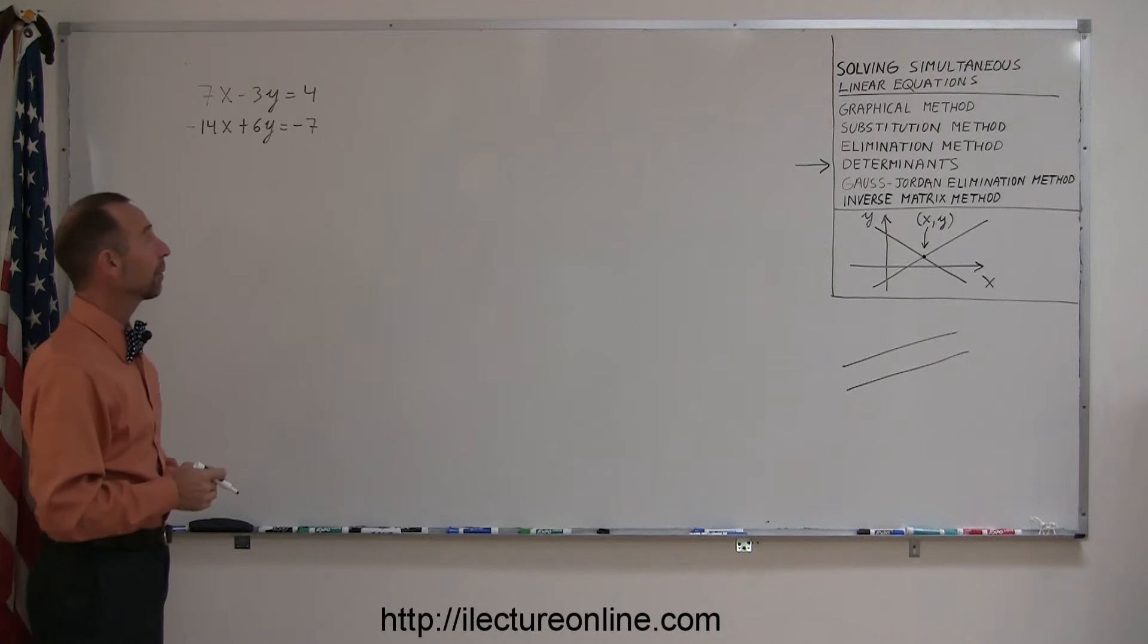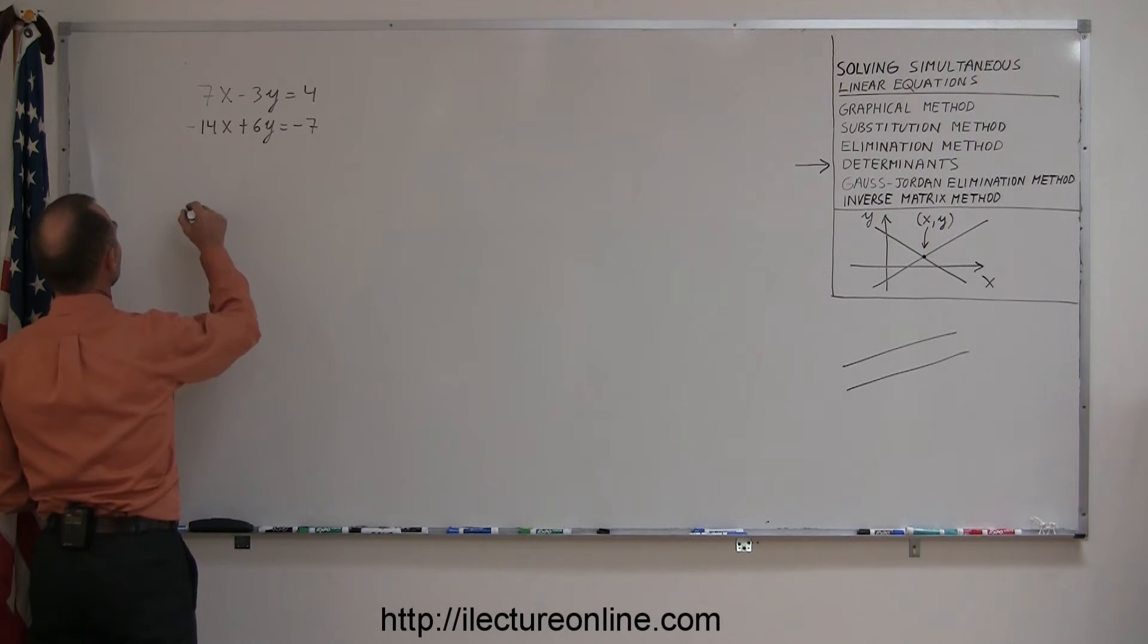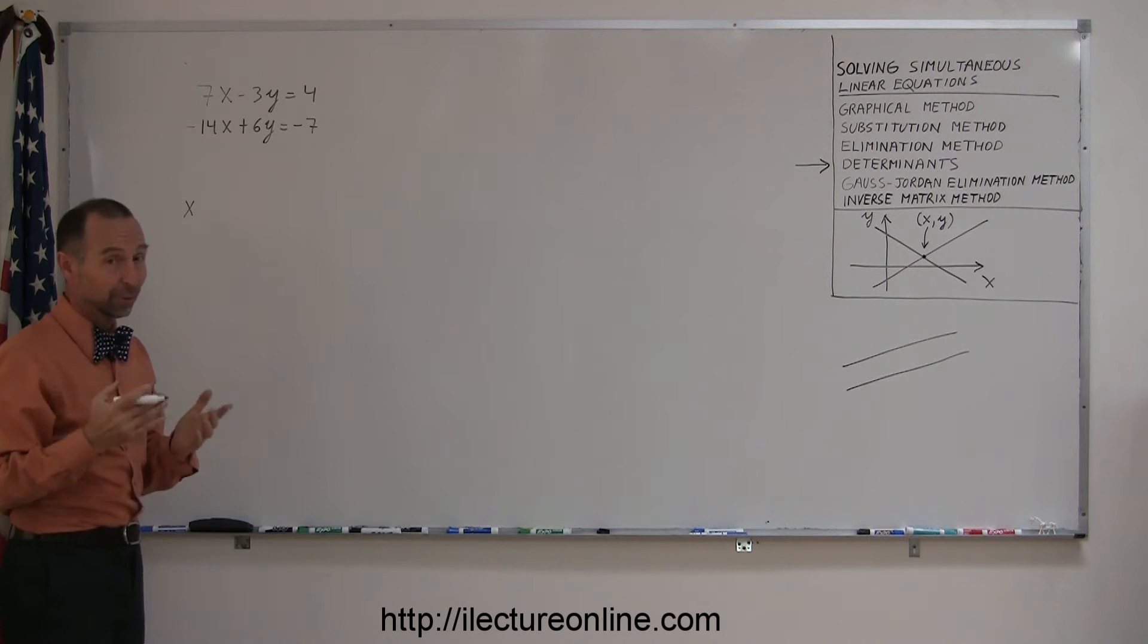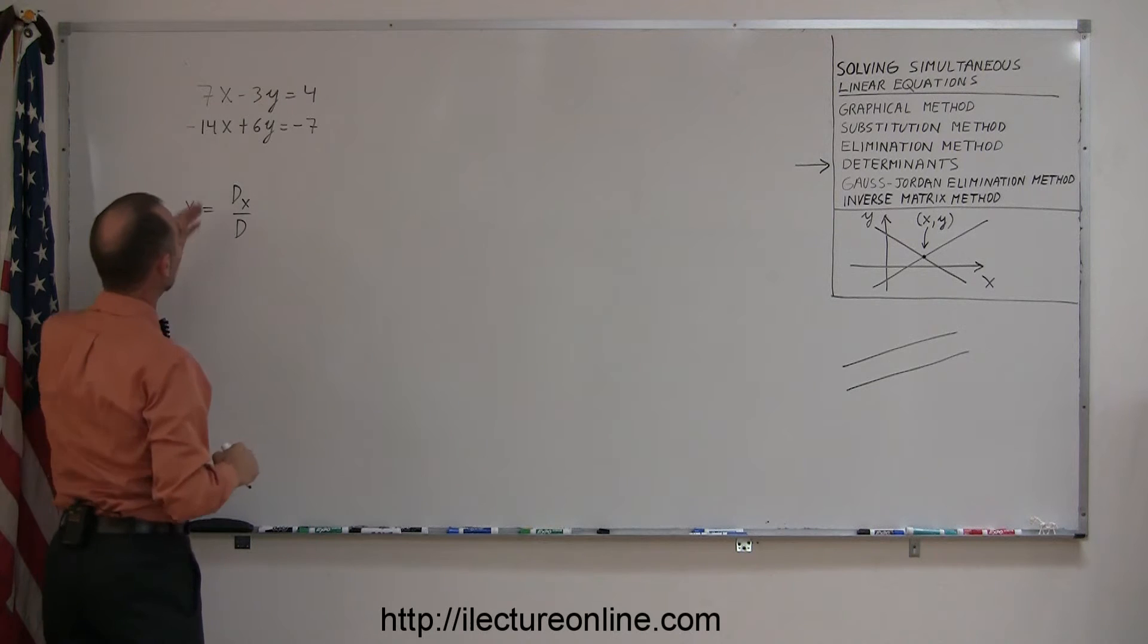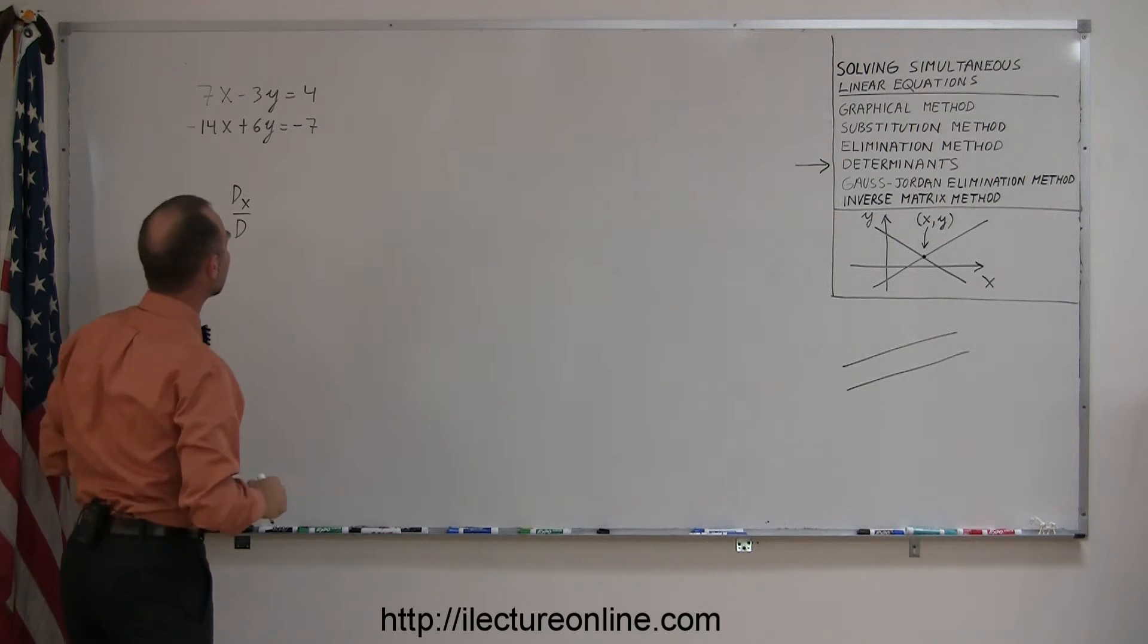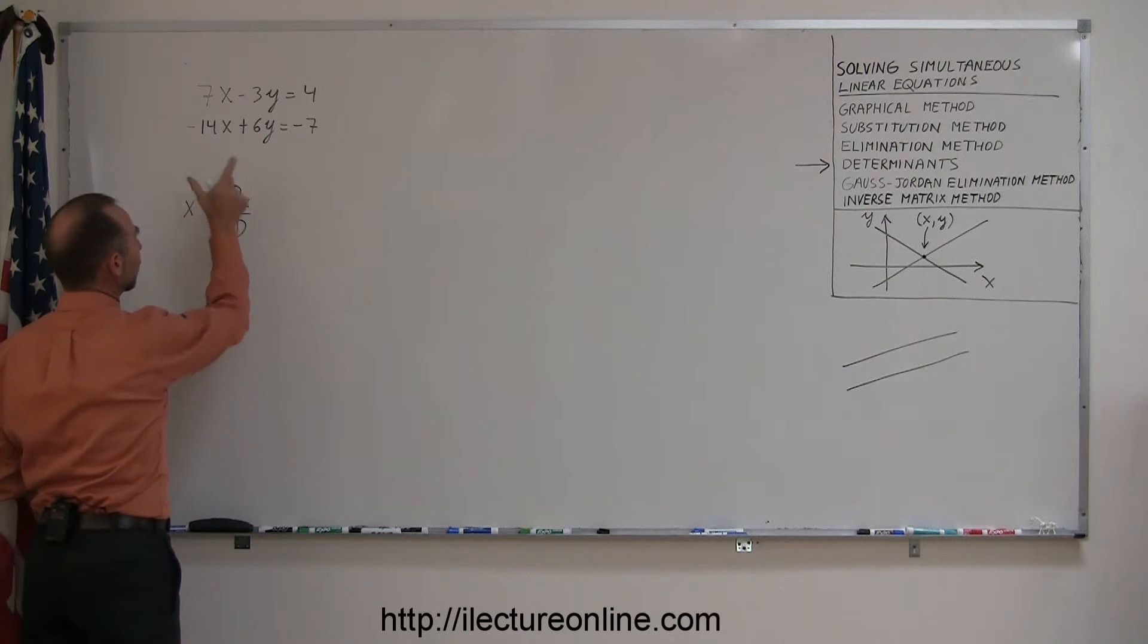So we can say that the x-coordinate of the point where they cross, if there was such a place, has to equal the d sub x over the d, which is the determinant with the x-coefficients replaced by the constants, divided by the determinant of this set of equations. And the y value can be found by taking the d sub y and dividing by the d.